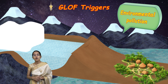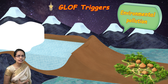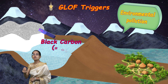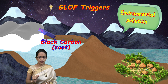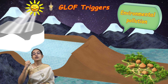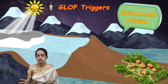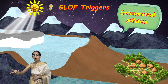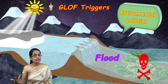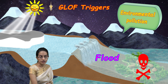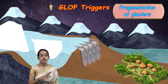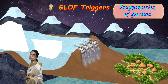Environmental pollution is another significant cause for triggering GLOF. Black carbon, also known as soot, gets deposited on the glacier. Since it is black, it has a higher capacity for absorbing heat, resulting in quicker melting of glaciers. This quicker melting triggers flood events, causing glaciers to melt rapidly and even leading to fragmentation of glaciers.